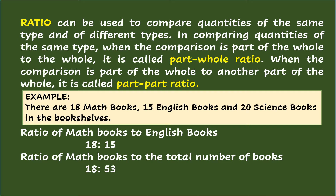So the ratio of math books to English books is 18 is to 15. This kind of ratio is known as part-part ratio, since the number of math books, which is 18, as well as the number of English books, which is 15, are both parts of the given number of books.